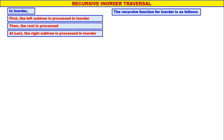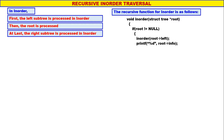The recursive function for inorder is as follows. The name of the function is inorder and the parameter is the root of the tree. If root is not equal to null, process the left subtree in inorder using recursion, then print root's info — that is, process the root — and at last process the right subtree in inorder using recursion.